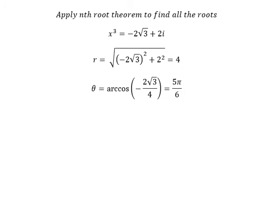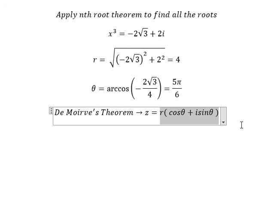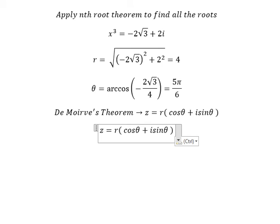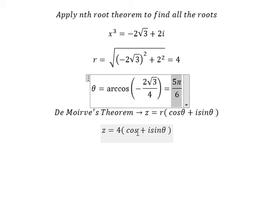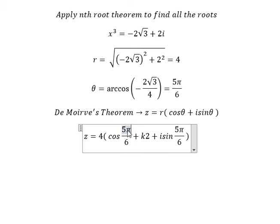And now we will apply De Moivre's theorem. So we find z equals r multiplied with cosine theta plus i sine theta. Before we use this, we need to apply nth root theorem, so in here we put k2 pi. We put tan k2 pi angle.